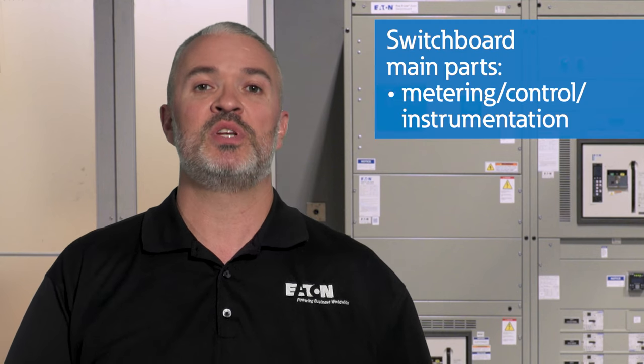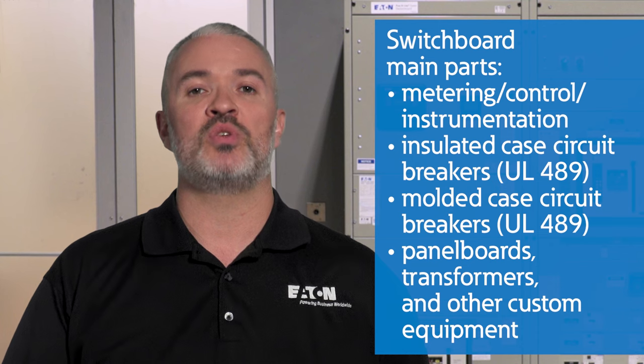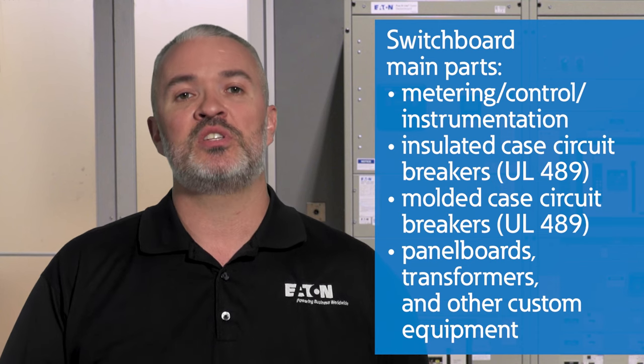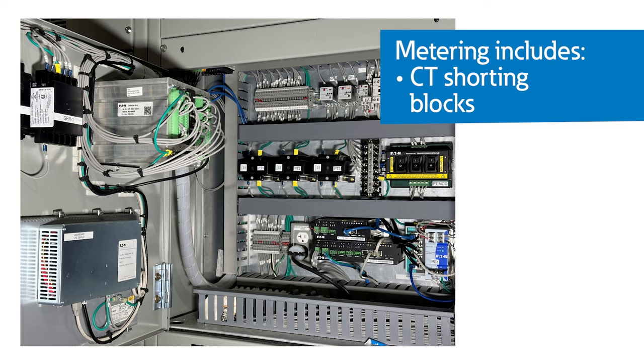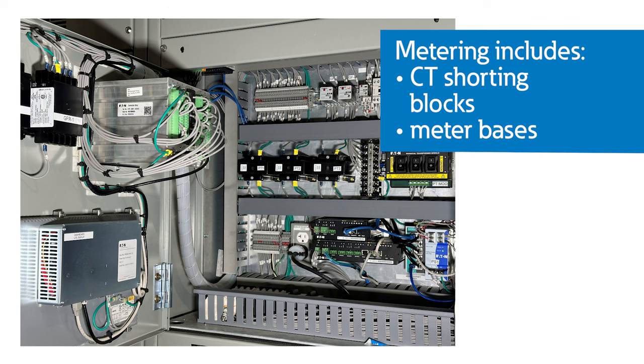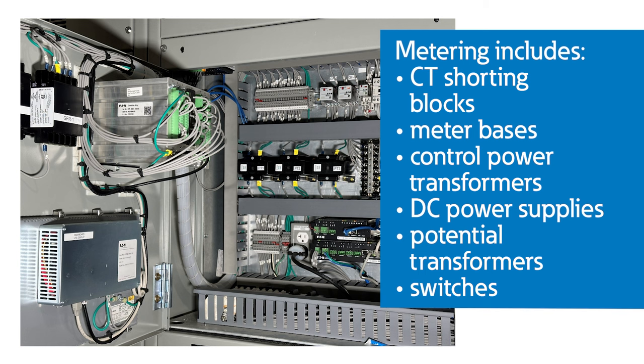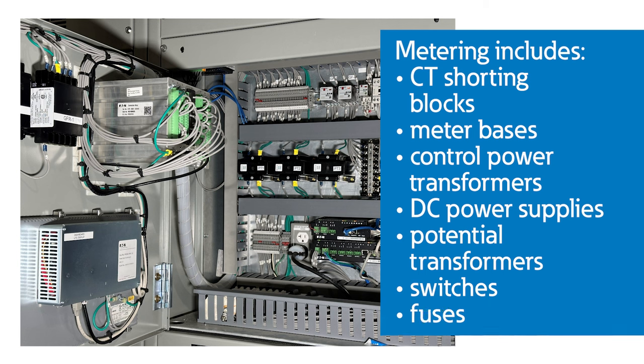Now let's discuss the main parts of a typical switchboard: metering, control and instrumentation, insulated case circuit breakers, molded case circuit breakers or MCCBs, and panel boards, transformers, and other custom equipment. The metering section includes CT shorting blocks, meter bases, control power transformers, DC power supplies, potential transformers, switches, fuses, and much more.